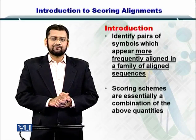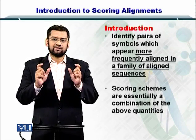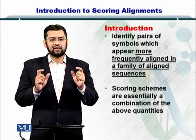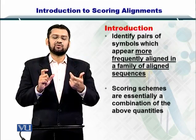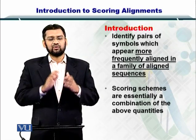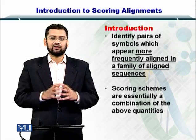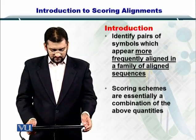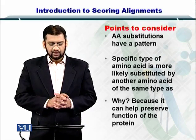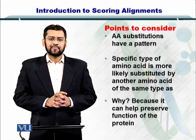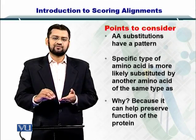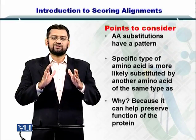What we need to do is create pairs — pairs of which amino acid is frequently substituted by which other amino acid, as well as which amino acid is very rarely substituted by another amino acid. If we have a list of these pairs, we can easily score them in a more biologically correct manner. The scoring schemes are essentially a comparison of such pairs. The replacement of amino acids, or the insertion or deletion of specific amino acids into proteins, have specific patterns.